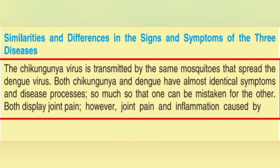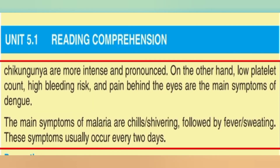Now let's look at the similarities and differences in the signs and symptoms of the three diseases. Chikungunya and dengue are caused by the same mosquitoes and have identical symptoms. Joint pain is similar in both cases, but the joint pain and inflammation caused by chikungunya are more intense. In malaria, the symptoms of shivering, fever, and sweating occur every two days, and these are the main distinguishing symptoms of malaria.